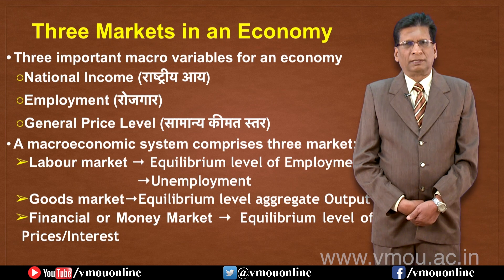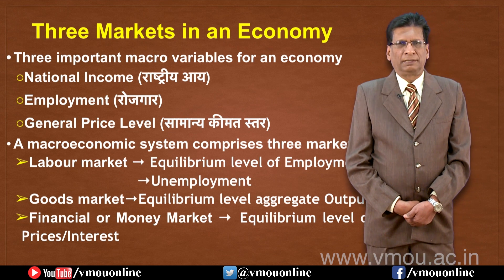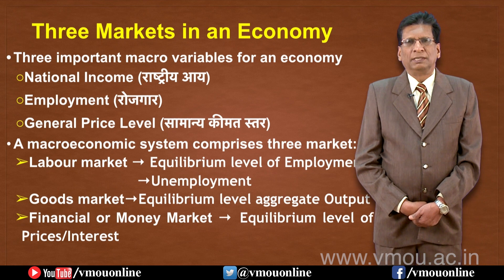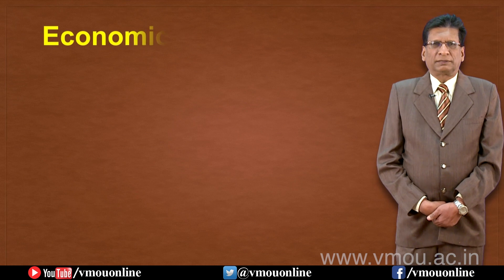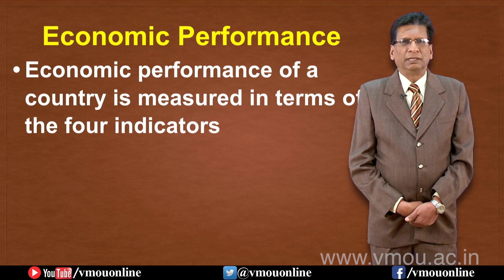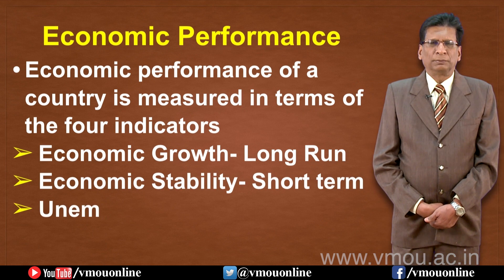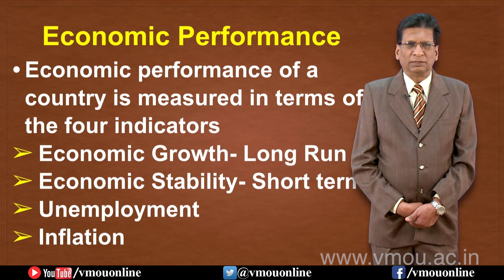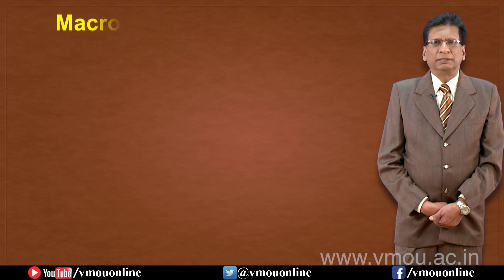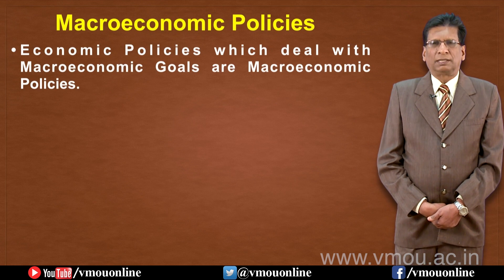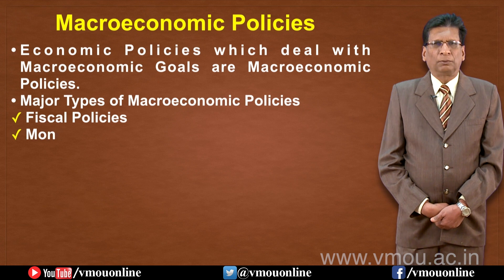In macroeconomics, we study total demand and total supply in the goods market. The third market is the money market, where price equilibrium and interest rate determination take place. To assess a nation's economic performance, we mainly need four indicators: economic growth, economic stability, unemployment, and inflation. The policies that address these macroeconomic goals are called macroeconomic policies.